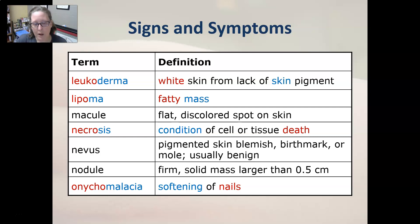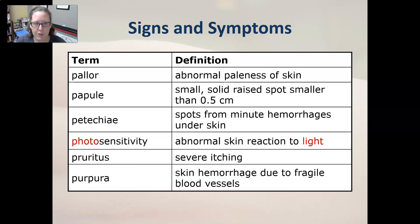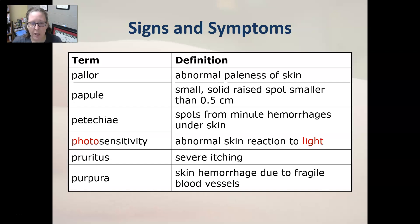Onychomalacia is the softening of nails in an abnormal way. Pallor is the abnormal paleness of skin — you see that a lot with anemia or loss of blood. Papule is a small solid raised spot smaller than 0.5 centimeters. Petechiae...